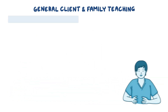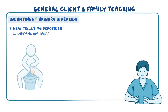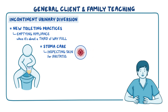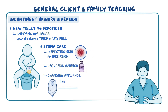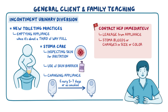For clients with an incontinent urinary diversion, discuss new toileting practices such as emptying their appliance when it is about one-third full. Counsel them on stoma care, including inspecting the skin for irritation, using a skin barrier, and changing the appliance every five to seven days or as needed. Instruct them to contact their healthcare provider right away if there is leakage from the appliance, if the stoma bleeds or changes in size or color, if there are signs of skin irritation around the stoma, or if they are having trouble managing their appliance.